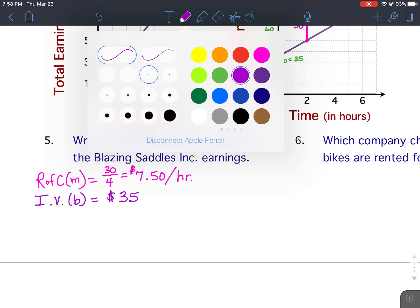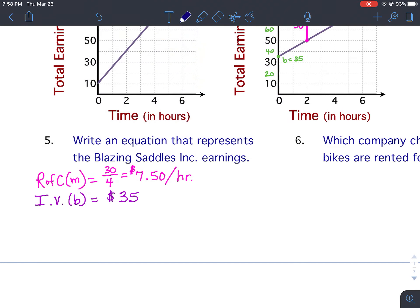Okay, so now we are going to write the equation for Blazing Saddles. Remember, it's y equals mx plus b. y equals mx plus b. So the slope goes in front of x, the y-intercept goes behind x.